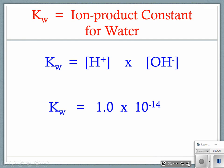Here is another important equation: the ion product constant of water, Kw, is assigned a value of 1.0 times 10 to the negative 14. So Kw equals 1.0×10⁻¹⁴. If you substitute that in and you have one of these values, you can calculate the other.